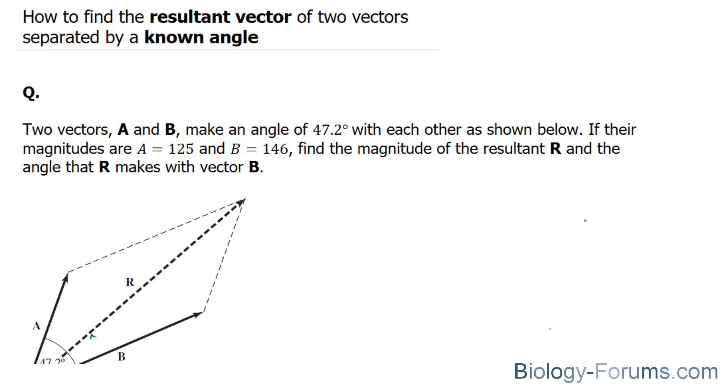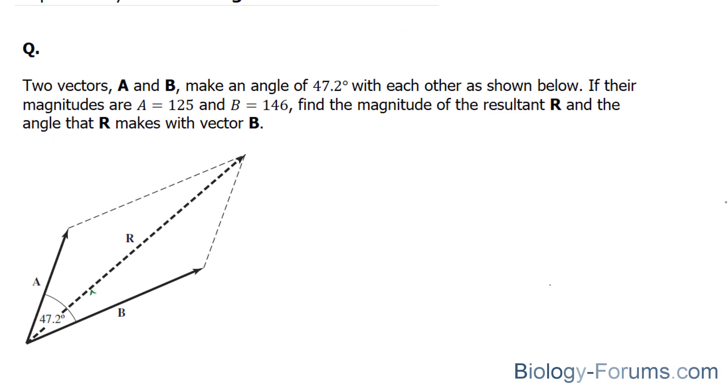In this demonstration, I'll show you how to find the resultant vector of two vectors separated by a known angle. The question reads, two vectors A and B make an angle of 47.2 degrees with each other, as shown below. If their magnitudes are A equals 125 and B equals 146, find the magnitude of the resultant R and the angle that R makes with vector B.